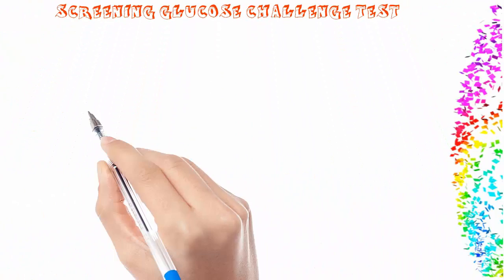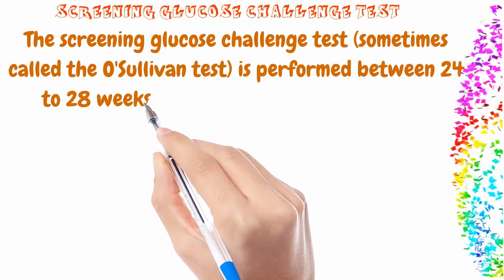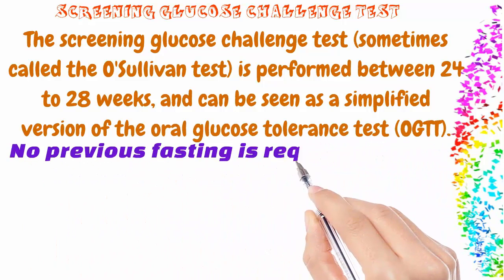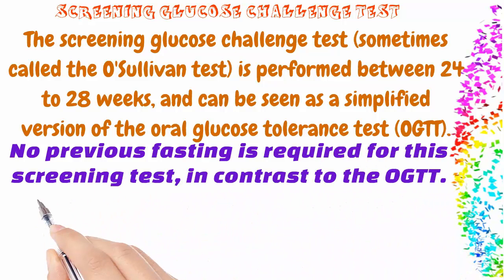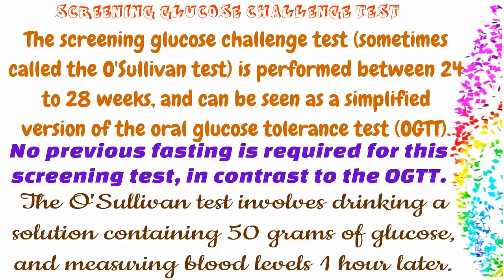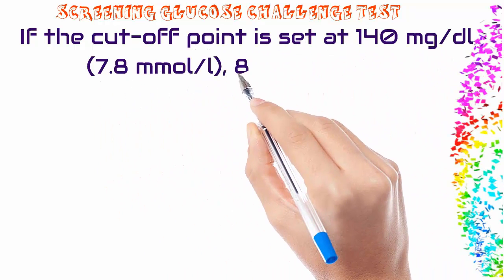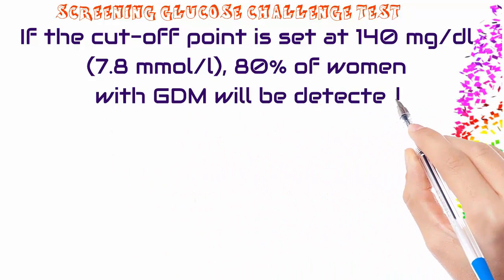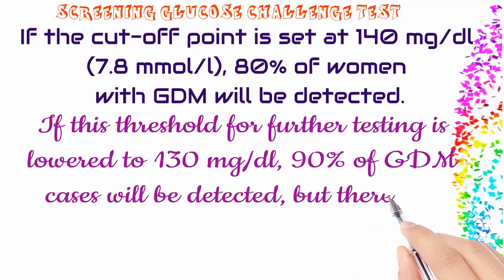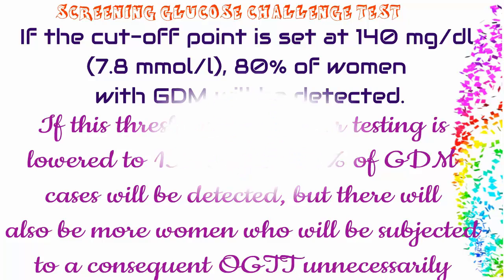The screening glucose challenge test, sometimes called the O'Sullivan test, is performed between 24 to 28 weeks and can be seen as a simplified version of the oral glucose tolerance test (OGTT). No previous fasting is required, in contrast to the OGTT. The O'Sullivan test involves drinking a solution containing 50 grams of glucose and measuring blood levels one hour later. If the cutoff point is set at 140 mg/dL (7.8 mmol/L), 80% of women with GDM will be detected. If the threshold is lowered to 130 mg/dL, 90% of GDM cases will be detected, but more women will be subjected to a consequent OGTT unnecessarily.